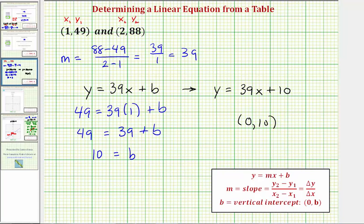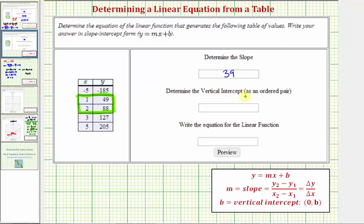So going back to our first slide, the vertical intercept as an ordered pair would be zero comma 10, and we do need these parentheses to indicate an ordered pair. And our linear function is y equals 39x plus 10. I hope you found this helpful.